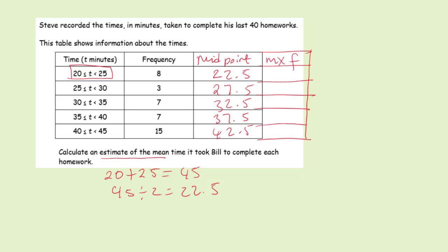Now we need to multiply the midpoint by the frequency. So 8 times 22.5 gives us 180, and 3 times 27.5 gives us 82.5. Make sure you check your answers using a calculator. Usually these questions come up in a calculator GCSE maths question.